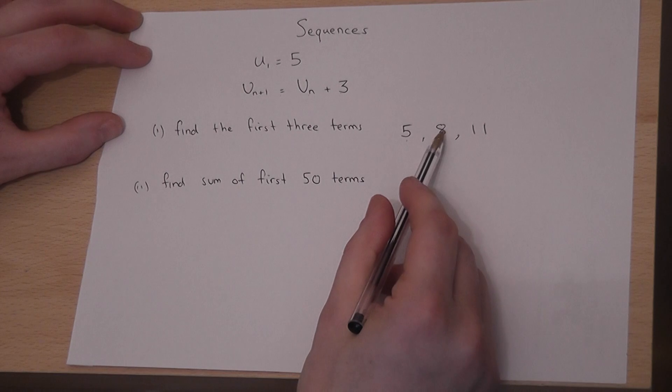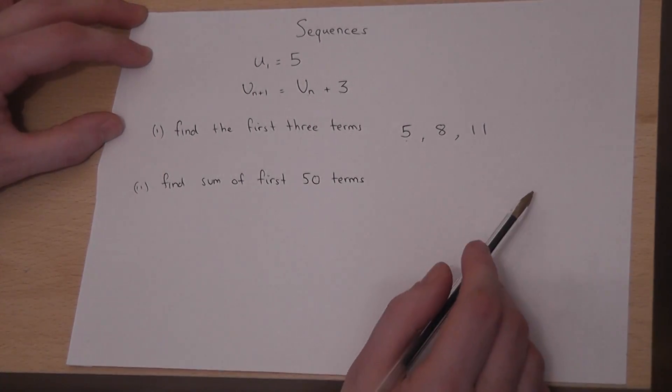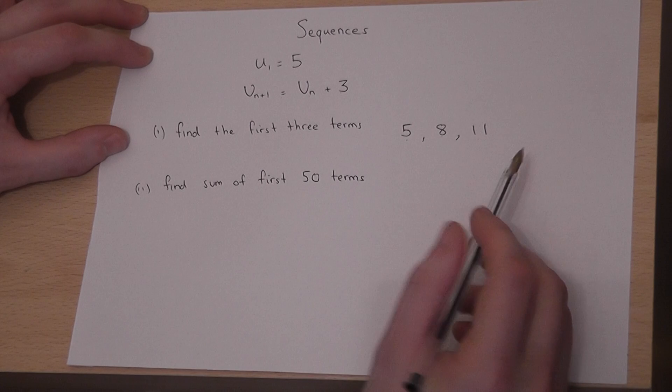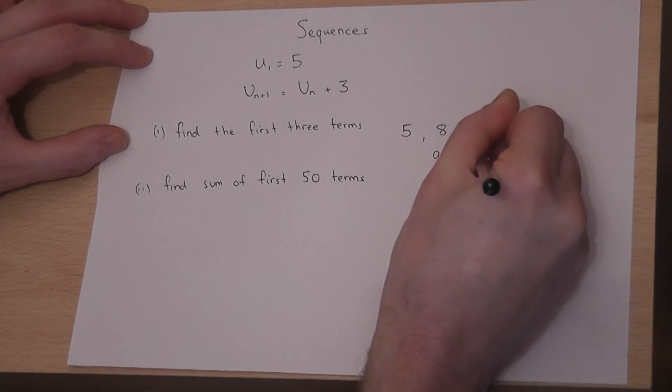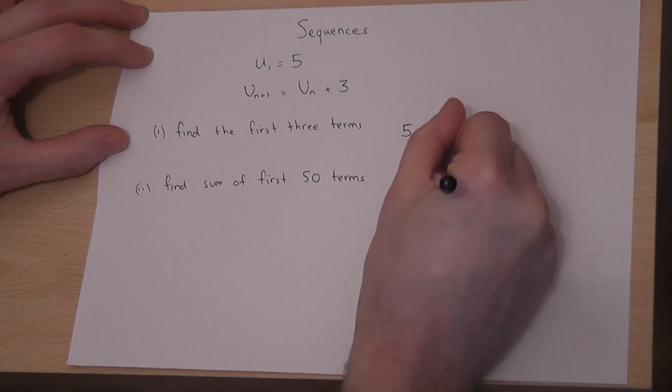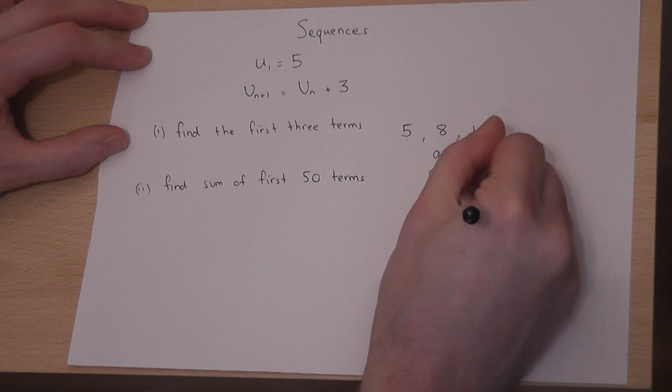So those are the first 3 terms in the sequence. What we can observe is that this is an arithmetic sequence. The terms go up by 3 each time. So this is arithmetic, where the first term a equals 5, and the common difference equals 3.